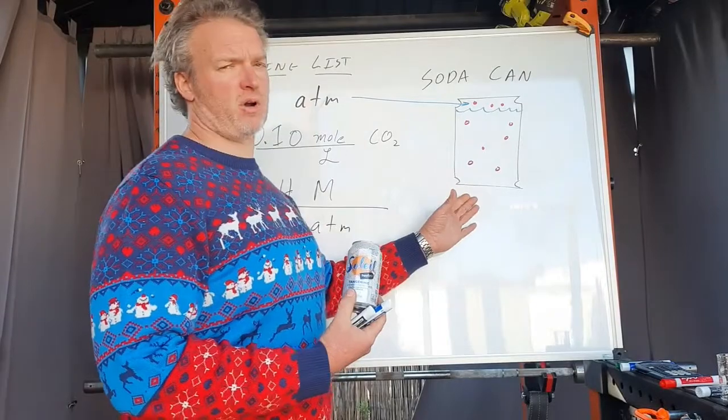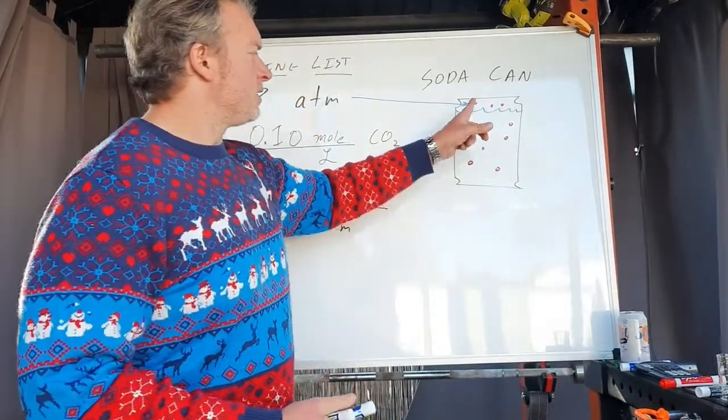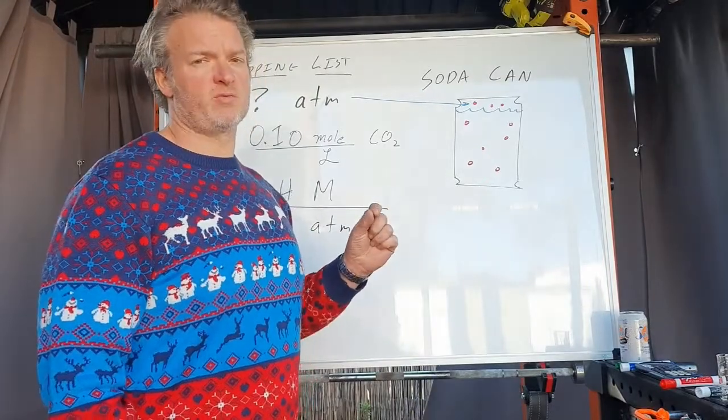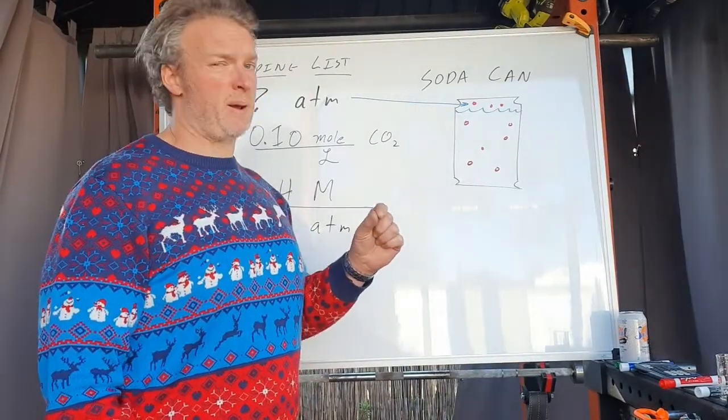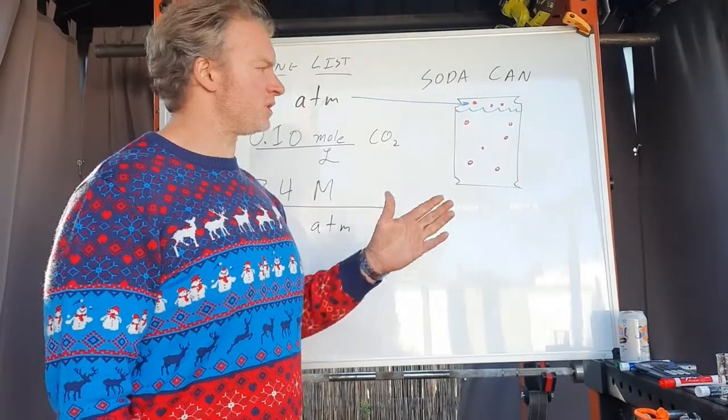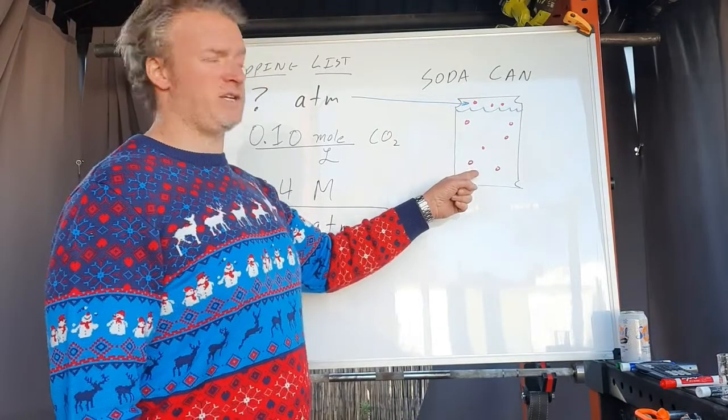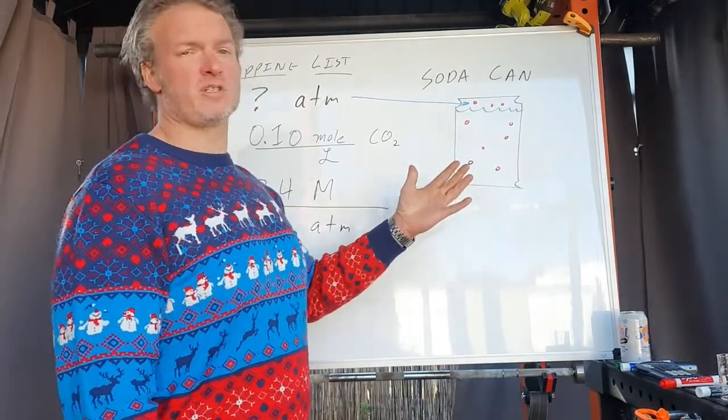This is a cutaway drawing of this soda can right here. The red circles are meant to represent carbon dioxide molecules, not bubbles, just molecules for your atomic vision. I do not have molecules of H2O drawn in here just because it would be too complicated.